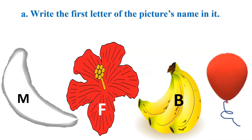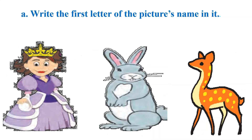Now tell me the first letter of the next picture. Correct — B, balloon. Balloon's name starts with letter B. Now this one — she is a queen. The letter will be Q.